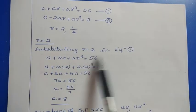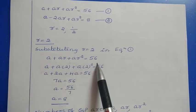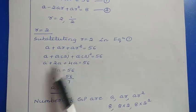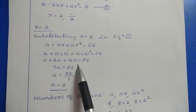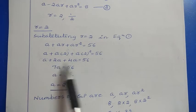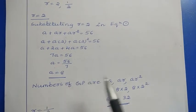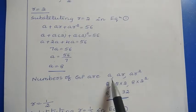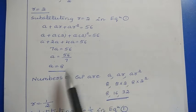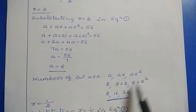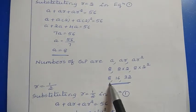Substituting R equals 2 in equation 1: A plus 2A plus 4A equals 56, so 7A equals 56, giving A equals 8. Therefore the terms of the GP are A, AR, AR squared — that is 8, 16, and 32. So the numbers in geometric progression are 8, 16 and 32.